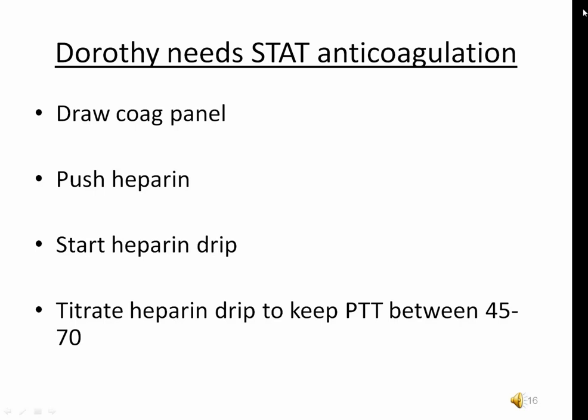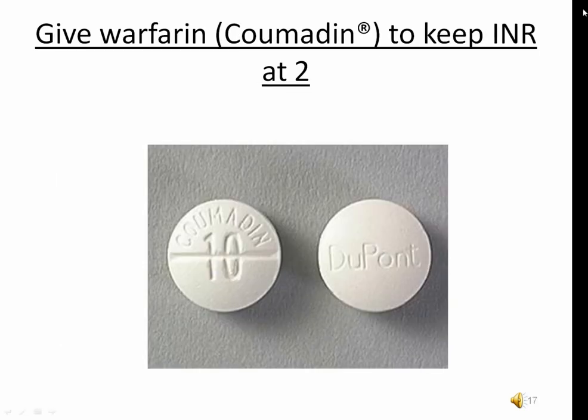For less severe clots, enoxaparin injections may be ordered instead of IV heparin. Frequent coagulation panels will be drawn to ensure the heparin is working and clotting time is where it should be. The typical goal of heparin therapy is to keep the PTT between 45 and 70 seconds. Note that at Kaiser facilities, an anti-Xa is drawn for heparin drip monitoring, which is considered more accurate than clotting times. A heparin drip is a high-alert medication requiring two RNs to confirm orders, dose, and dose adjustments. While the patient is receiving heparin, warfarin pills will also be started.